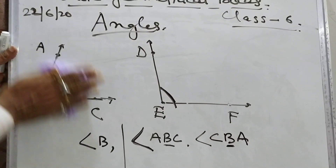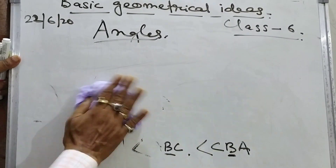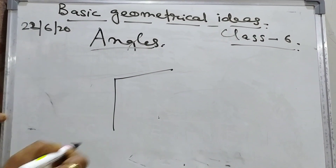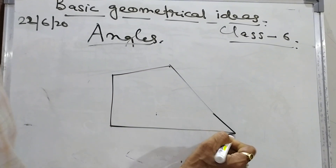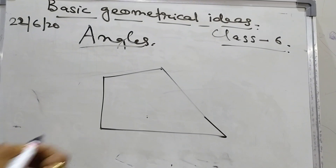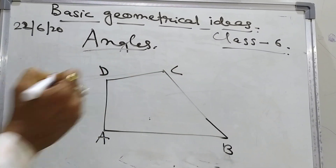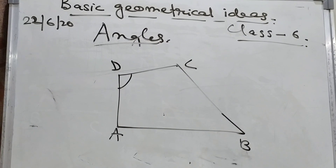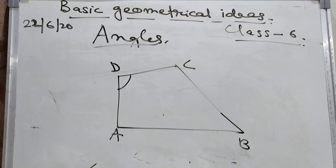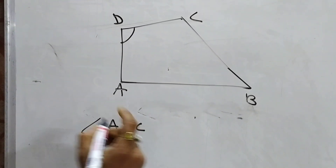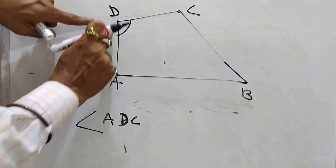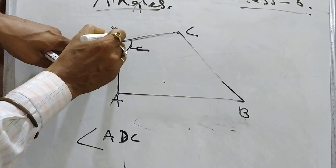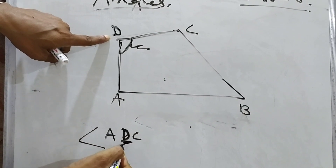Let me give you an example from the textbook. This is the diagram: this is A, this is B, this is C, and this is D. Now, if I have to name this angle, the name of this angle is angle ADC — A, D, C. Students, ADC represents which angle? It represents the angle at D, because D is in the middle. See, D is in the middle — the arms are AD and DC.